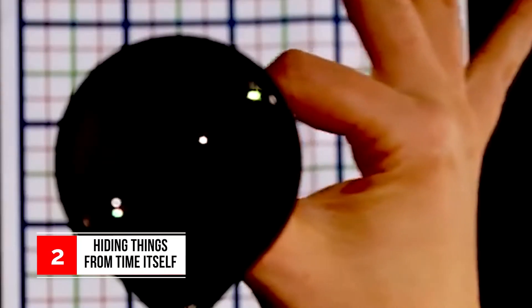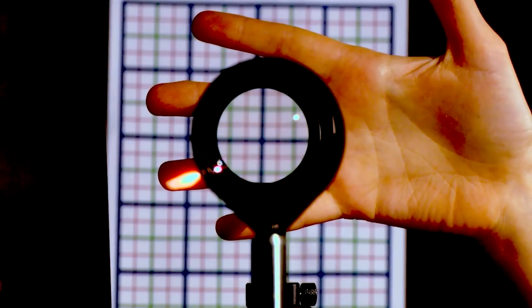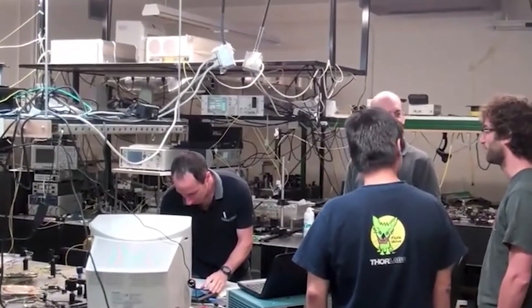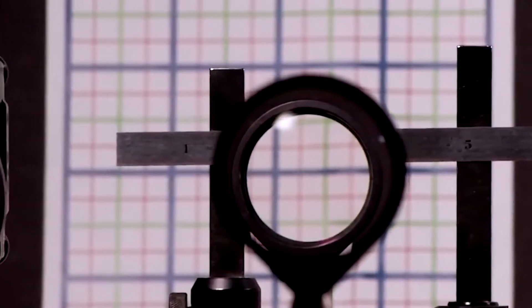Number 2: Hiding things from time itself. Scientists have already taken the next leap and figured out how to hide things from time itself. Researchers from Cornell University have made a device which splits a light beam into two components, transports it through a medium, and puts it back together at the other end with the help of a time lens.